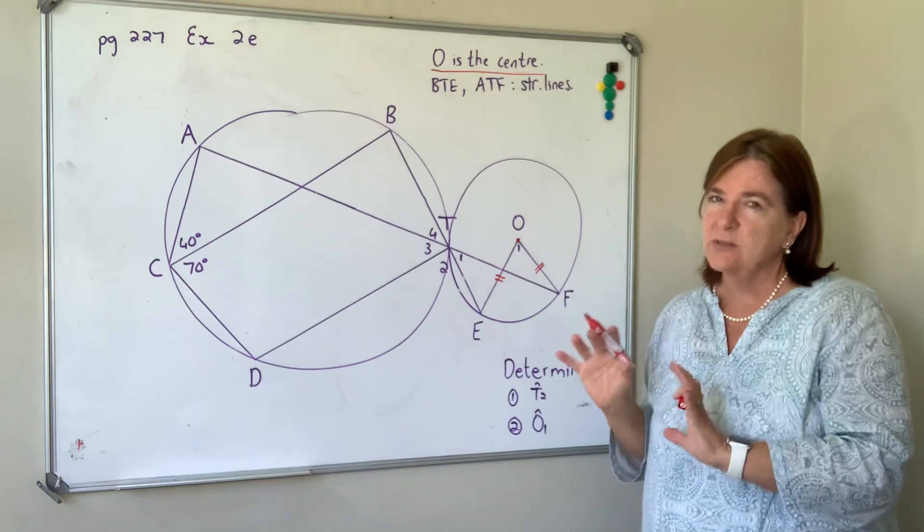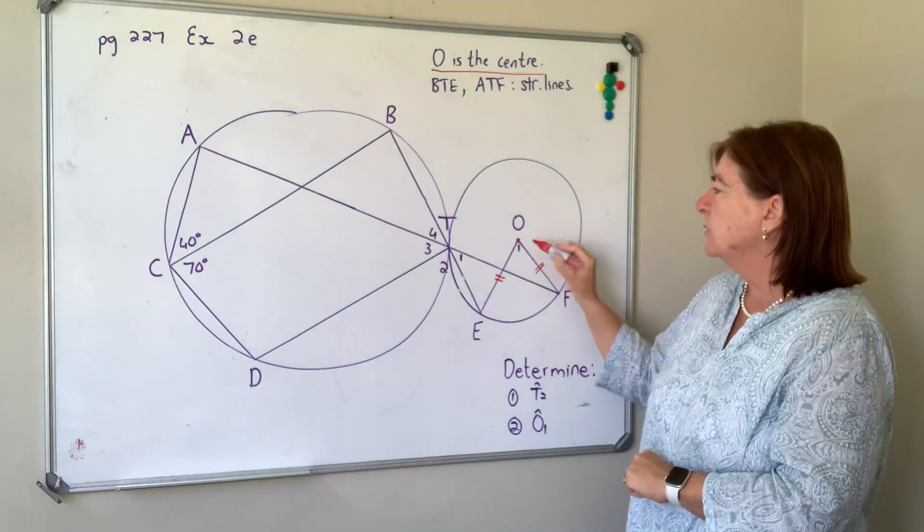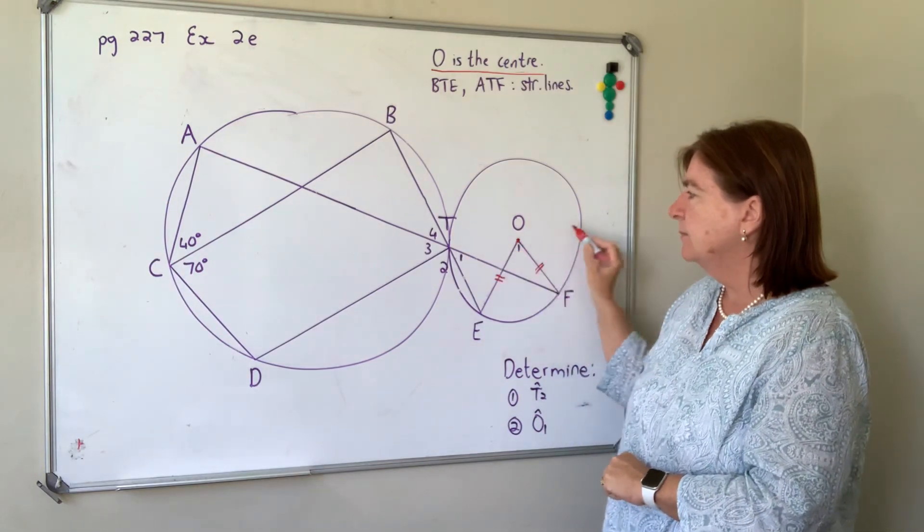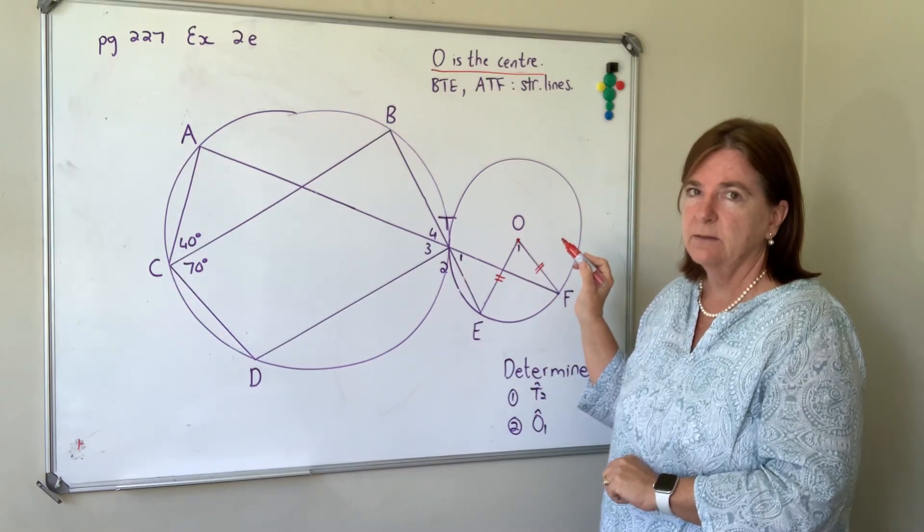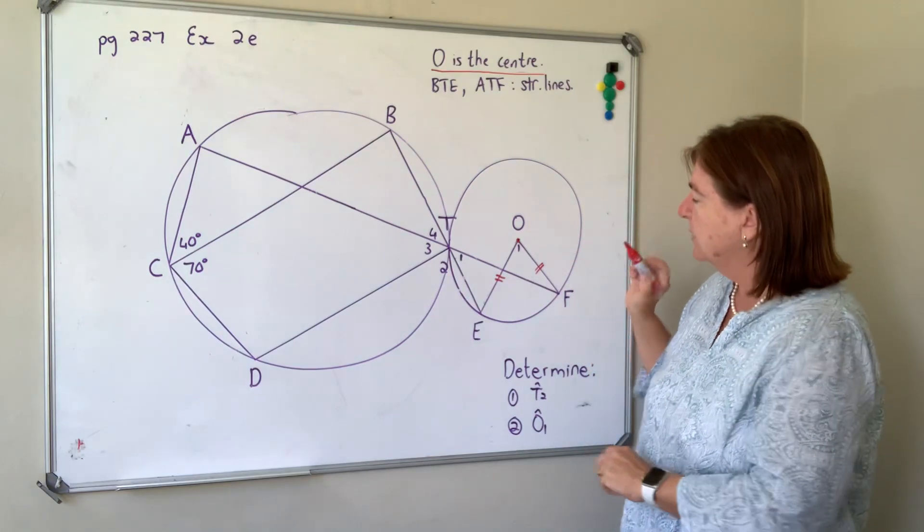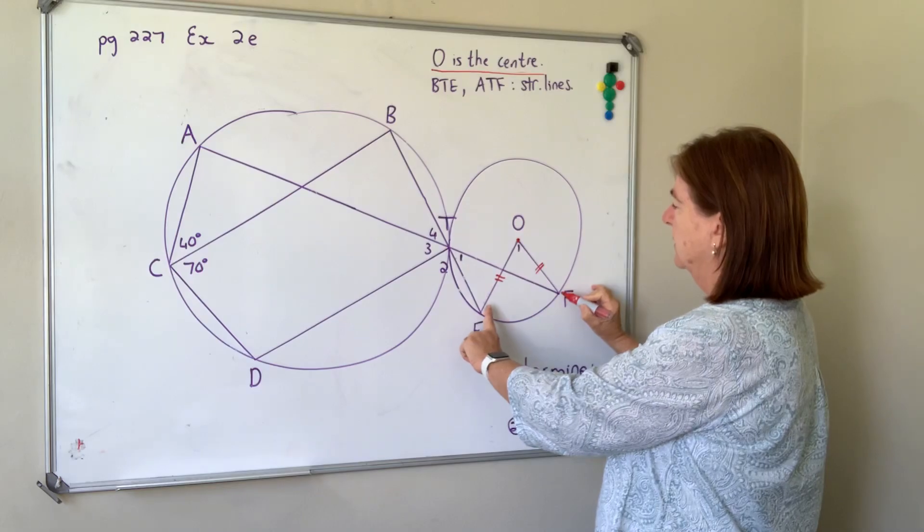Radii are very useful, maybe not in this example but in other examples. Radii because they're isosceles triangles. We also look is there maybe a diameter because then it would be 90 degrees.